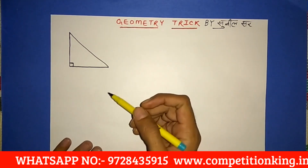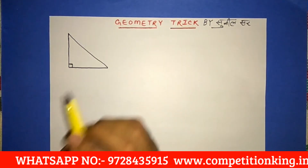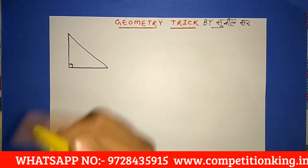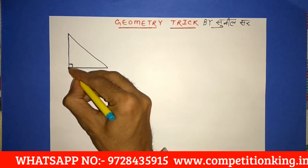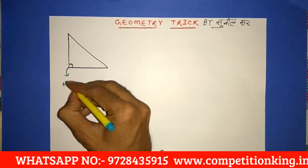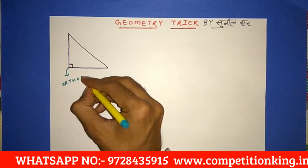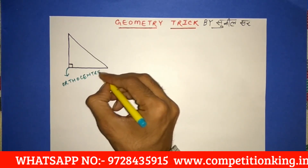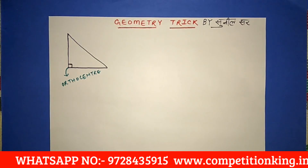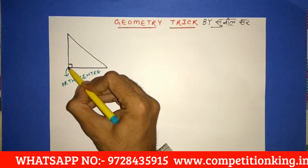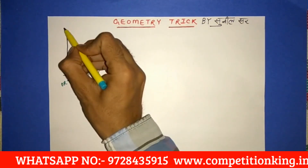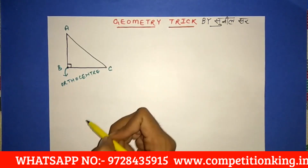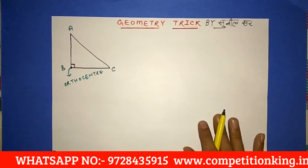A right angle triangle is a triangle in which one angle is 90 degrees. The orthocenter of a right angle triangle is located where the 90 degree angle is — that is, at the vertex of the right angle in triangle ABC.